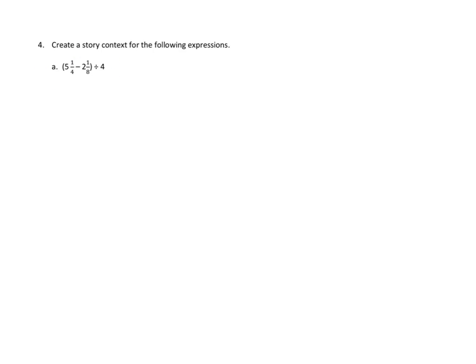Create a story context for the following expressions. What do we have going on here? So it looks like first we have subtraction going on. So I'm going to write a little note. First, we have subtraction. And then, once we've done the subtraction, which we do first because it shows us with our parentheses, then we do division. So step two is division.